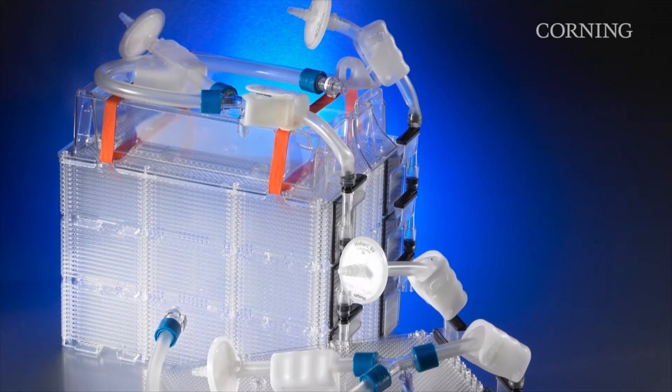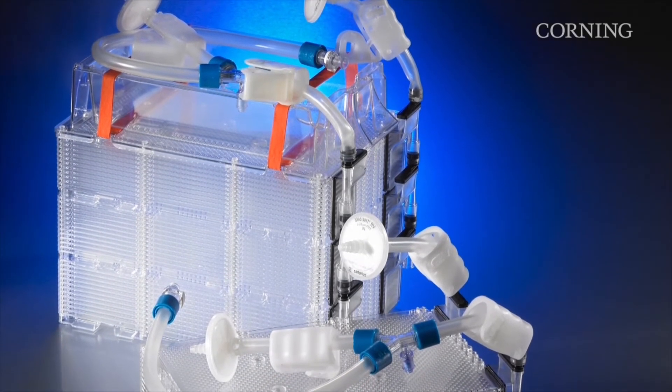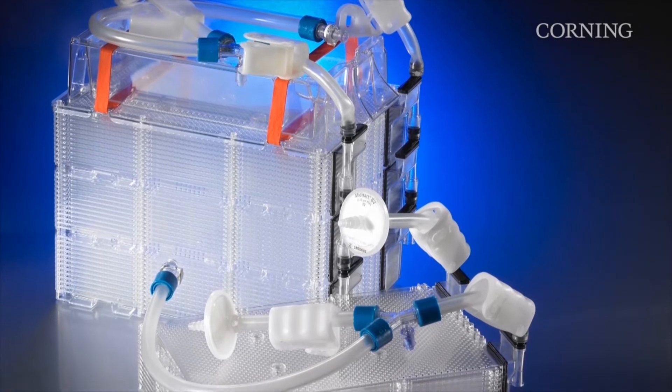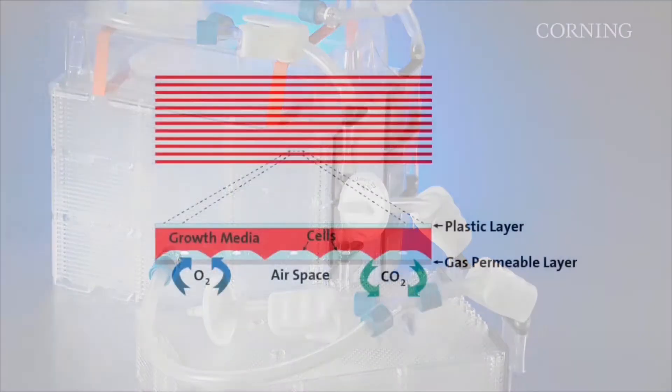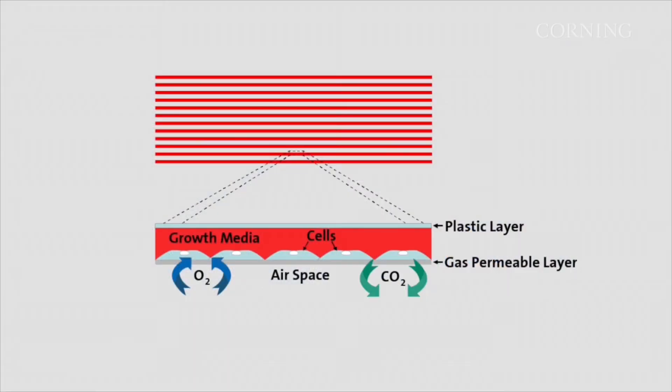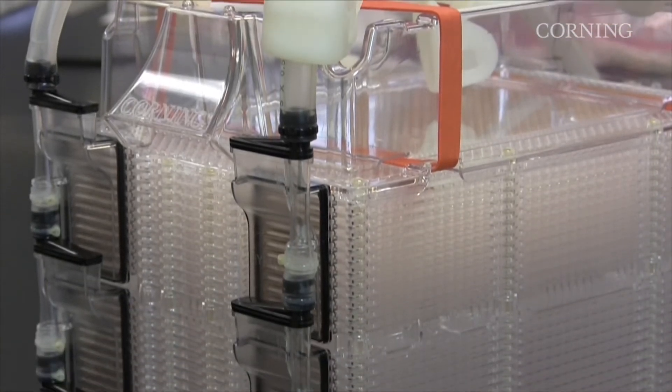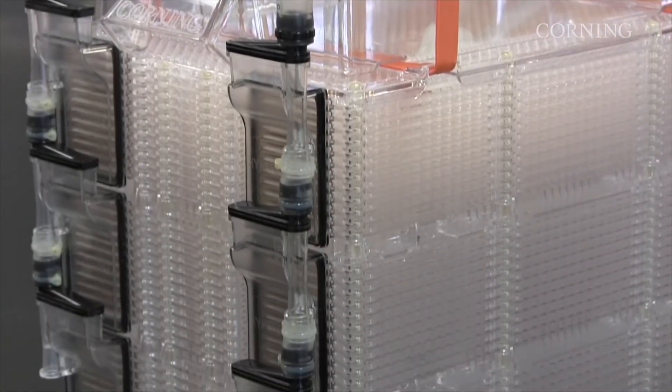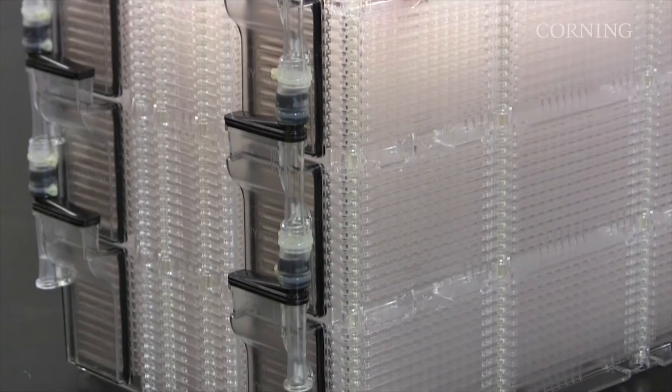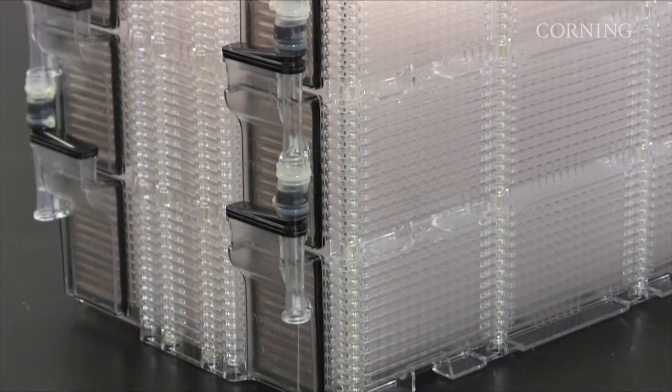Corning HyperStack cell culture vessels are designed to increase cell yields in the same spatial footprint as larger stacked vessels. Corning's HyperTechnology uses gas-permeable film to eliminate headspace within the vessel. As a result, the 12- and 36-layer HyperStack vessels have the same spatial footprint as traditional 2- and 10-layer stacked culture vessels.